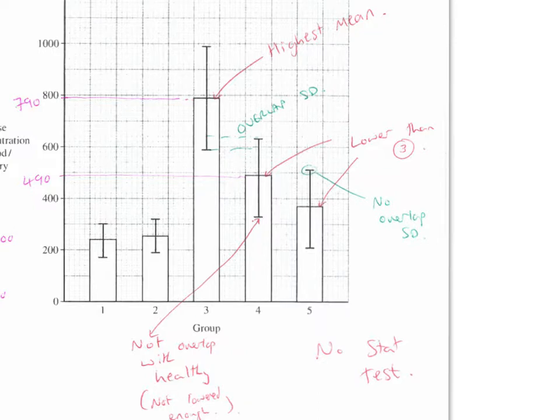So let's look at the last question. Should drug X be used to treat pancreatitis? Well, the only yes point is that the mean is lower than the people with pancreatitis. So it is reducing, on average, the symptoms. Lots of disagree points. Standard deviations overlap, so we don't know if there's a significant drop in mean amylase concentration. There's no statistical test, no t-test to see if these differences are significant.